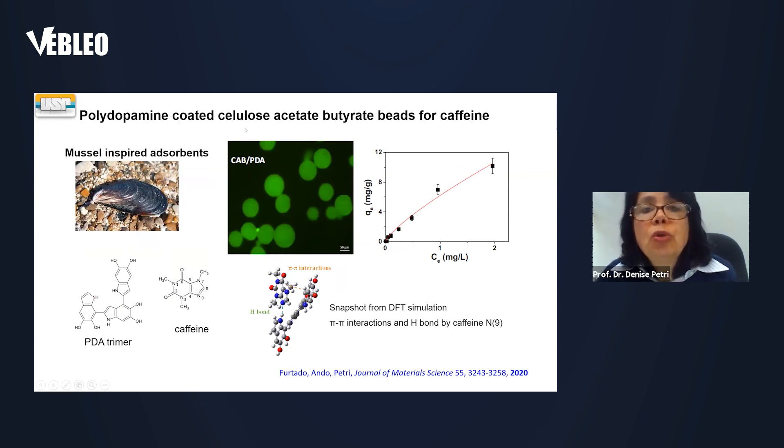Polydopamine can also be used to coat cellulose acetyl butyrate beads for the removal of caffeine. Polydopamine is what we call the mussel-inspired coating because the mussels use dopamine to attach to the rocks underwater in the sea. And we use it to coat the beads, cellulose beads. And it's very nice because they are fluorescent and they could remove very nicely the caffeine, which is also a pollutant. And we also did some DFT simulations, theoretical simulations, and understand what are the interactions that drive this absorption with pi-pi interactions and hydrogen bonding by this basic nitrogen here from caffeine.